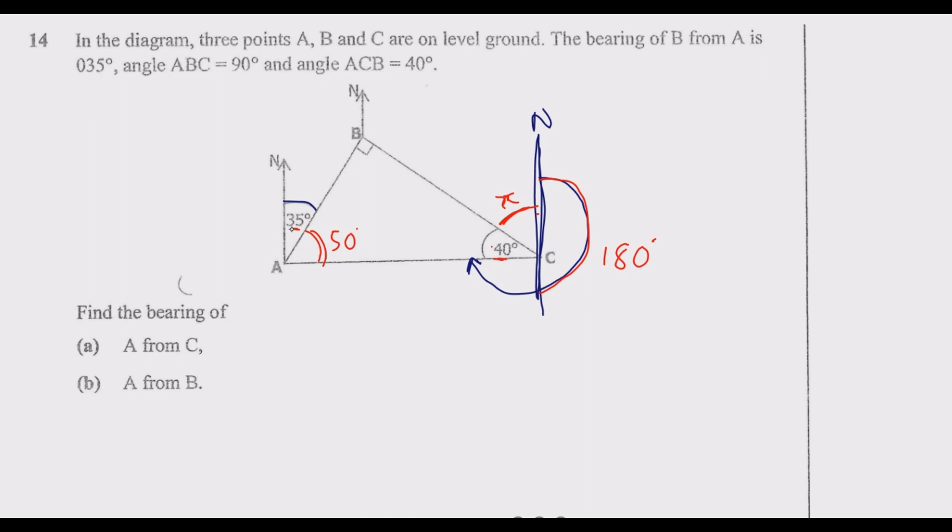Next, what we can do is we need to draw a line here and extend the north. Once we extend the north, we know that these lines are parallel. So this angle should be 35 degrees because these two lines are parallel. If this is 35, then 35 from 90, this angle should be 55 degrees. If that angle is 55 degrees, it means this angle x here is also 55 degrees because these are alternate angles.